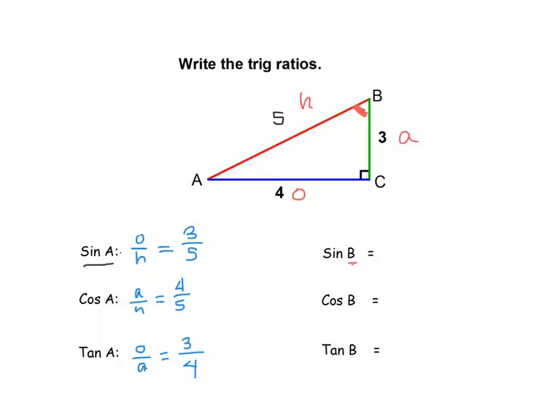So sine of B, sine opposite over hypotenuse. So that's going to be 4 over 5. Cosine, adjacent over hypotenuse. So that's 3 over 5. Tangent is opposite over adjacent. So now we get 4 over 3. And you have written the trig ratios.